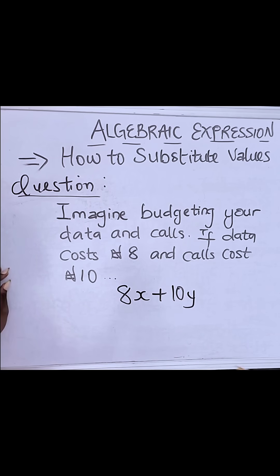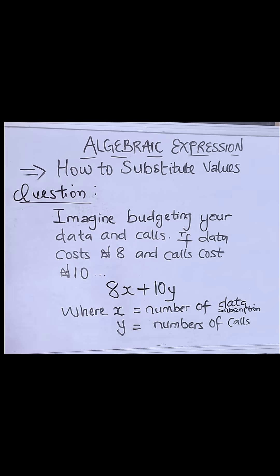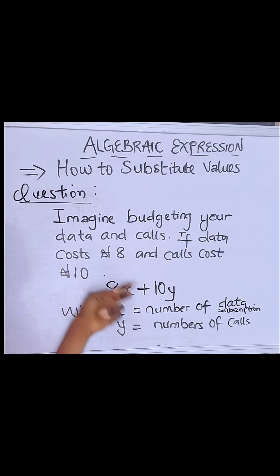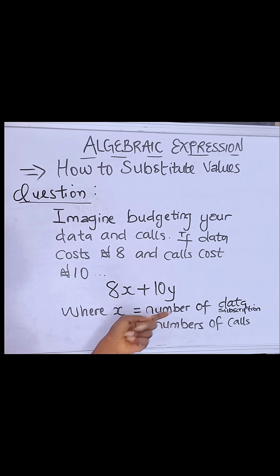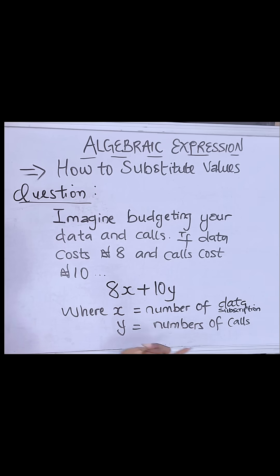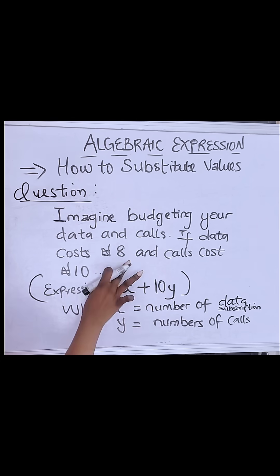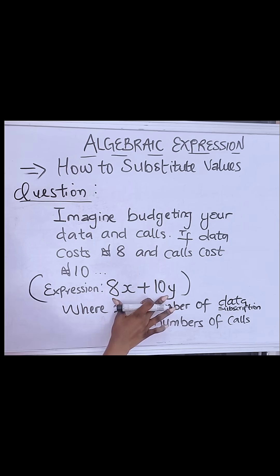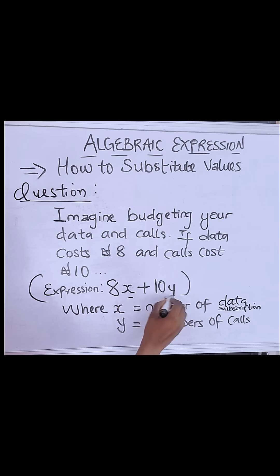If you would like to know how much it would cost you at the end of that month, so let's say x is the number of data subscriptions in that month and y is the number of times you make your calls in that month. This is the expression. So in order for us to express this imaginary situation, you can write it out like this. This is an algebraic expression because you have variables.